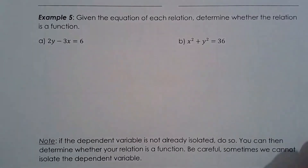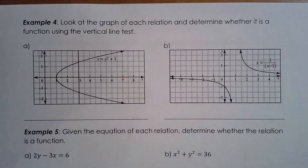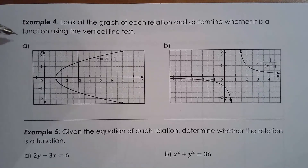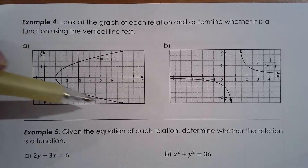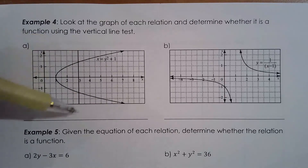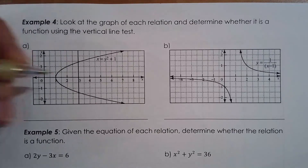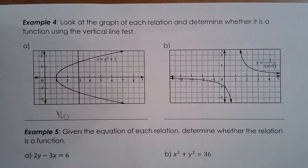Let's look at the graph of x equals y squared plus one. Does it pass the vertical line test? The answer is no — it fails. Remember, you only need to fail once. You don't need to fail ten million times — fail once and you can't be a function. It's very hard to be a function. So the answer here: not a function.